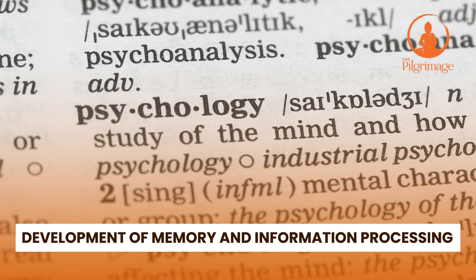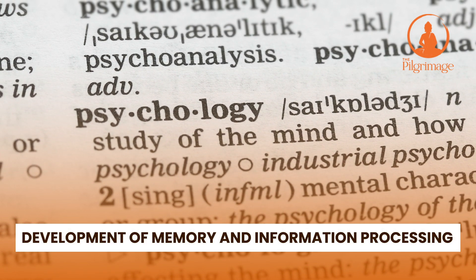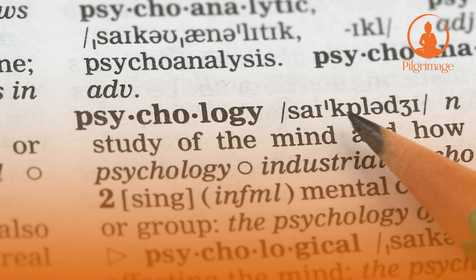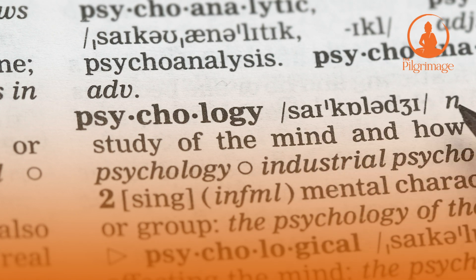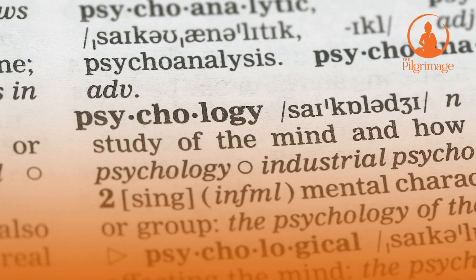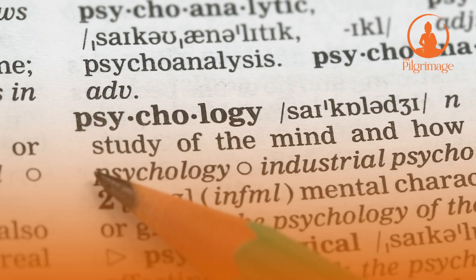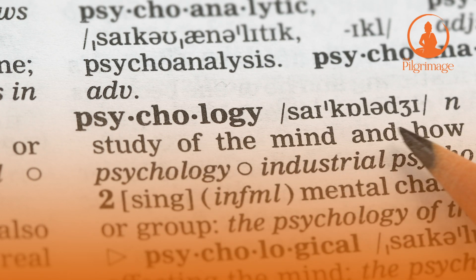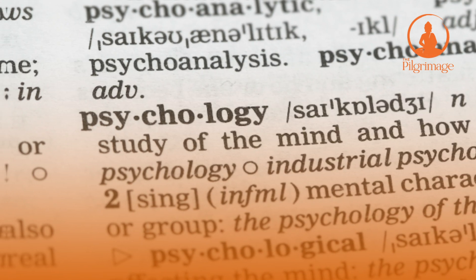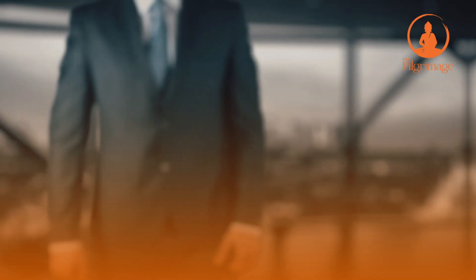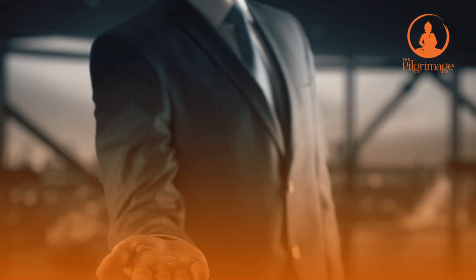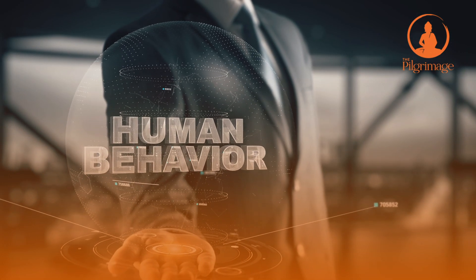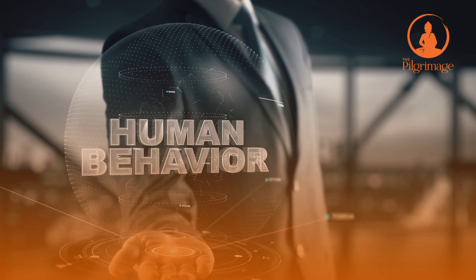Cognitive Information Processing Model. Information theorists approach learning primarily through a study of memory. The following Cognitive Information Processing Model presents a well-established paradigm of cognitive behavioral psychology.